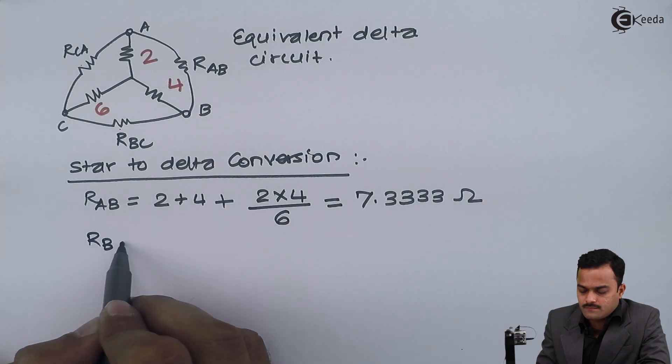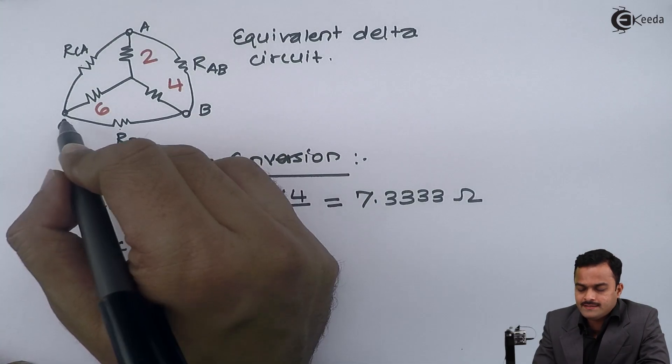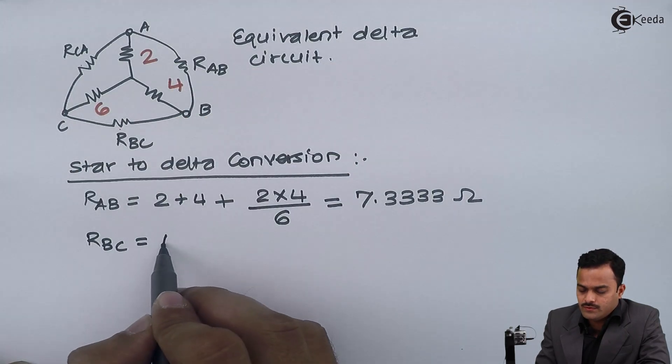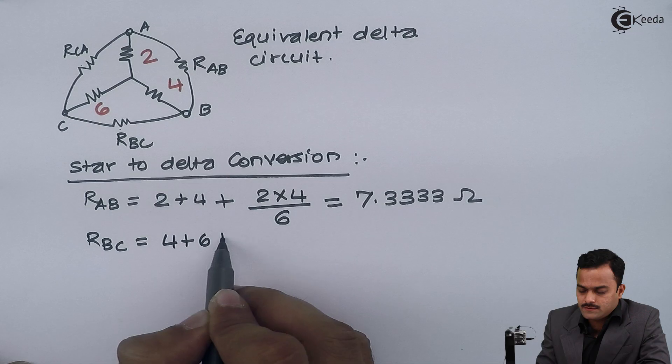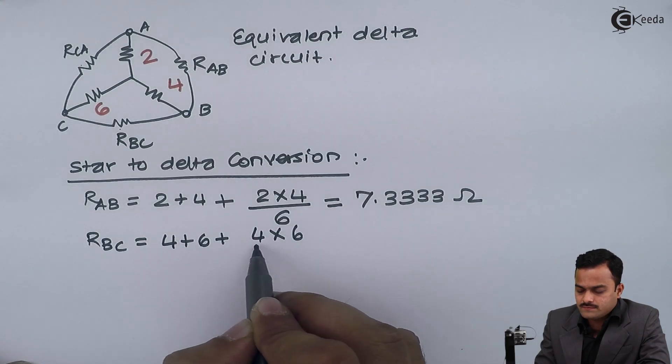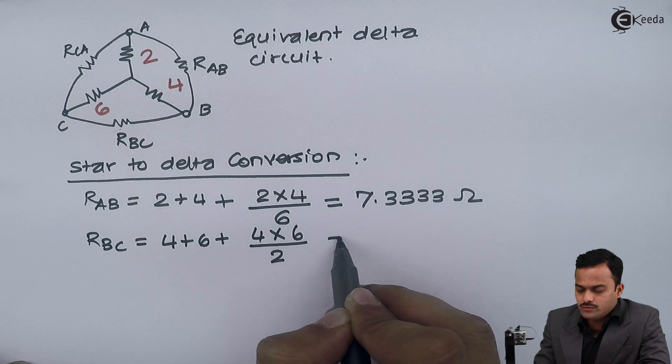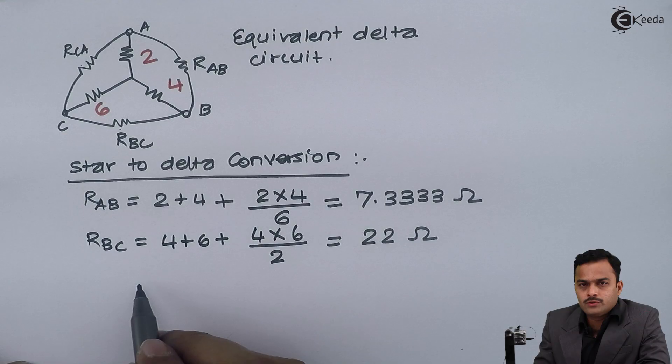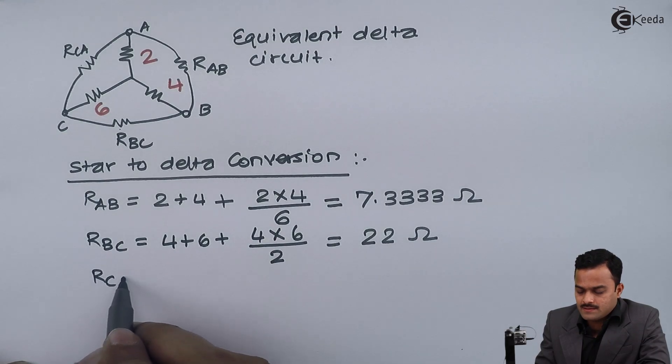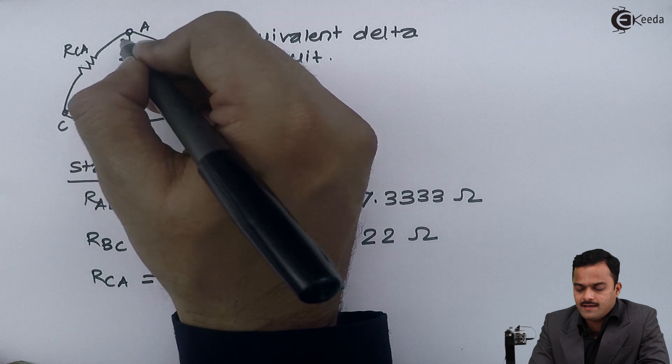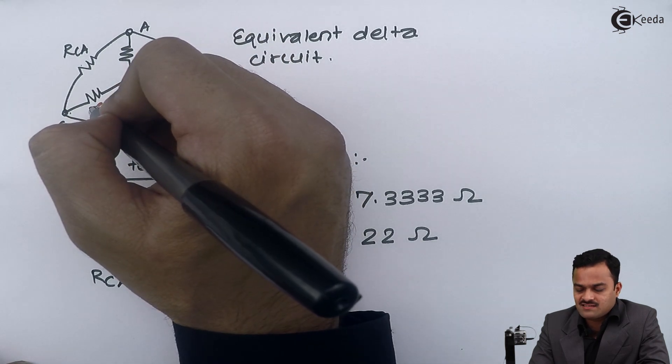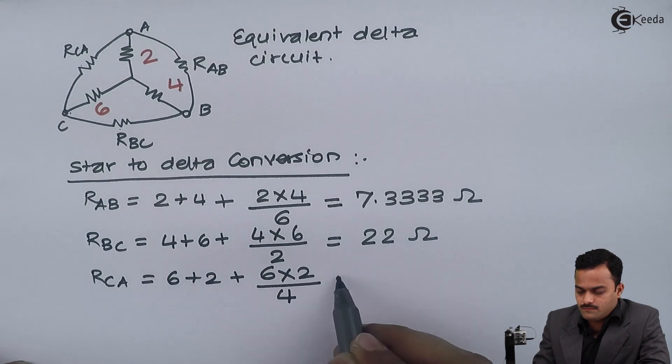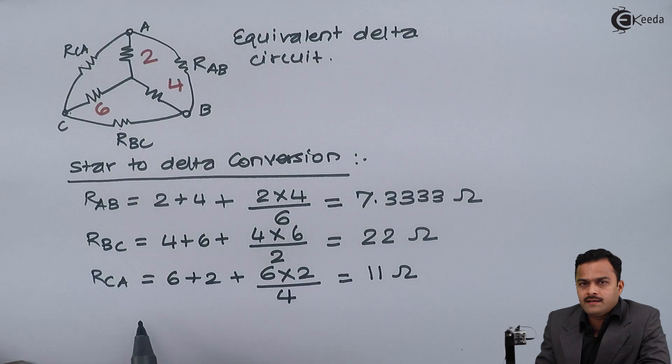Similarly, RBC between b and c initially in star 4 ohm and 6 ohm were connected. So, 4 plus 6 plus 4 into 6 divided by 2. If I solve I will get an answer 22 ohm. And in third case RCA between c and a resistors which were connected in star were 6 and 2. I will get 11 ohm.